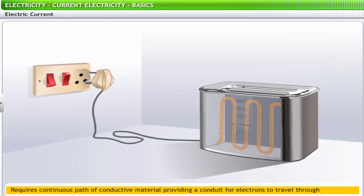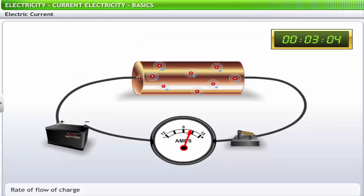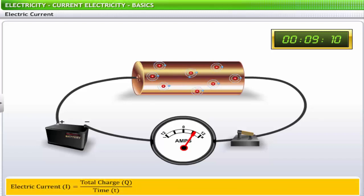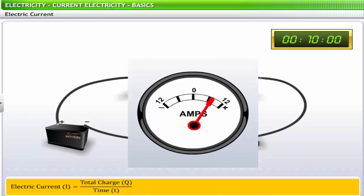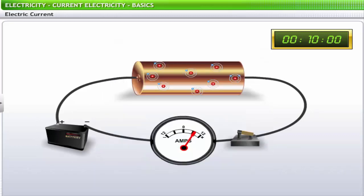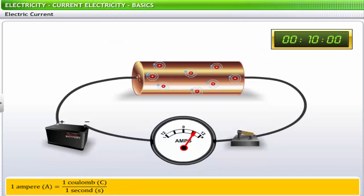When you unplug an appliance, say a toaster from the power supply, the flow of electrons is interrupted and the appliance stops working. You can measure electric current as the rate of flow of charge, or the amount of charge flowing through a point per unit time. Electric current is measured using an ammeter. The standard metric unit for current is ampere, often shortened to amp and denoted by the unit symbol A. One ampere is equal to one coulomb of electric current per second.